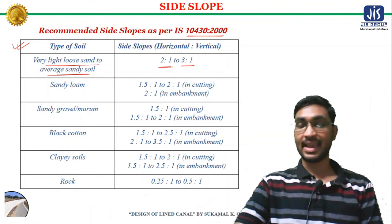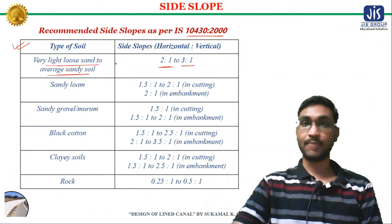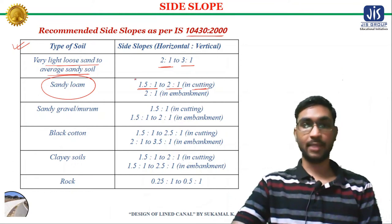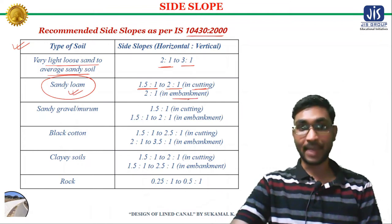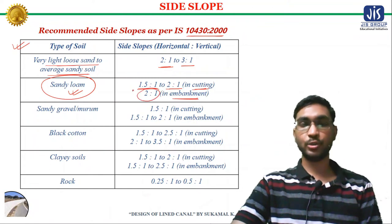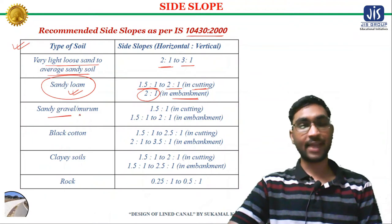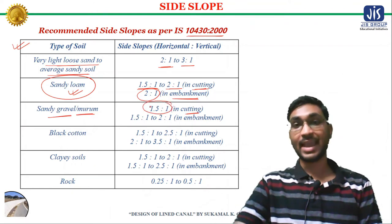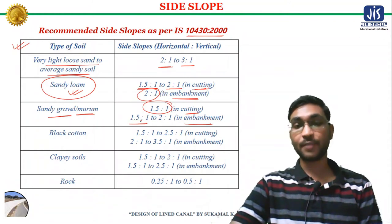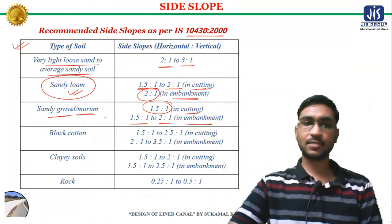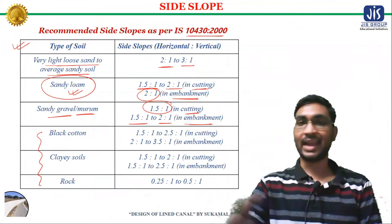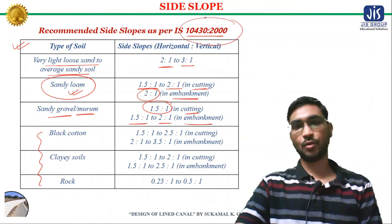If the type of soil is sandy loam, then in cutting the side slope should be 1.5:1 to 2:1, but in embankment the side slope should be 2:1. If the type of soil is sandy gravel or murram, then in cutting the side slope should be 1.5:1 and in embankment 1.5:1 to 2:1. These recommended values of side slopes for different soil types are given in IS 10430:2000.